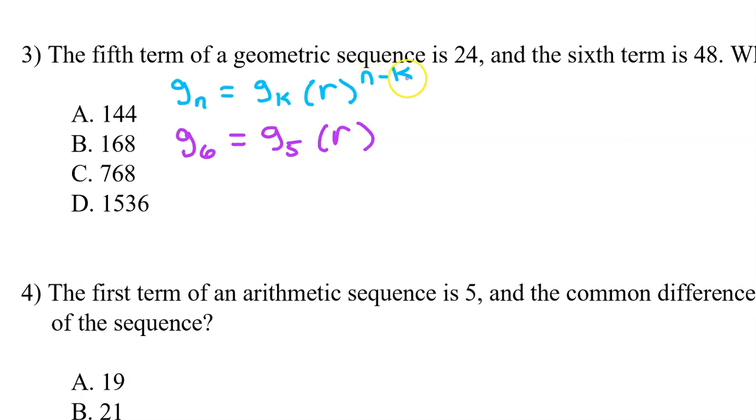We do know that n minus k will be 6 minus 5, which will be 1, which I really didn't need to write. Now, we know that the sixth term is 48, so I will now substitute in the 48. And the fifth term is 24, so the 24 goes right here, and now we just have 24r. A little algebra, dividing both sides by 24, and we get 2 is equal to r.